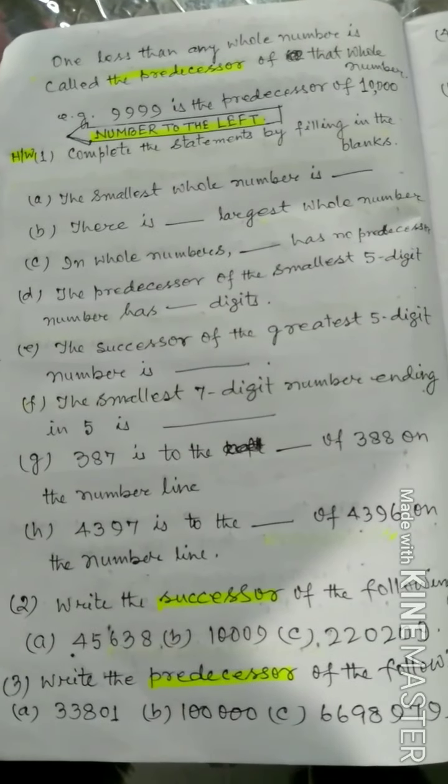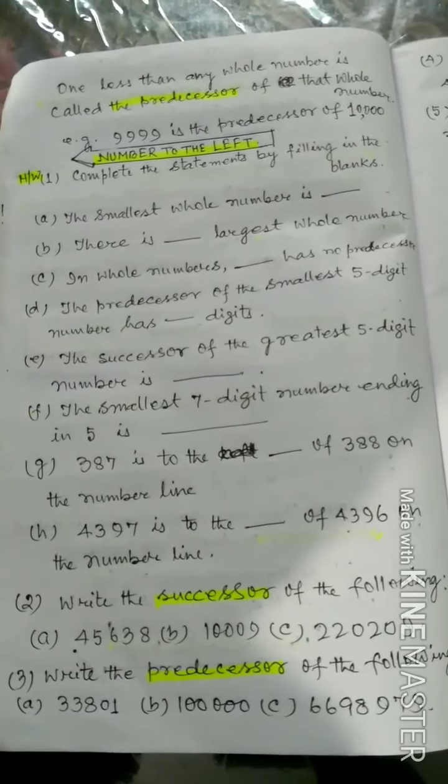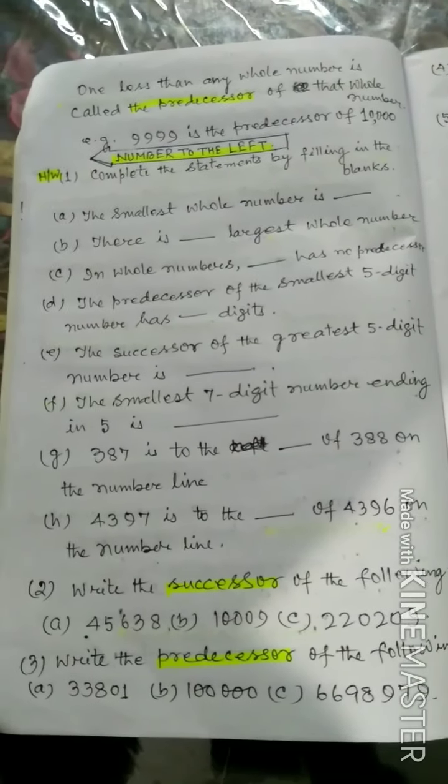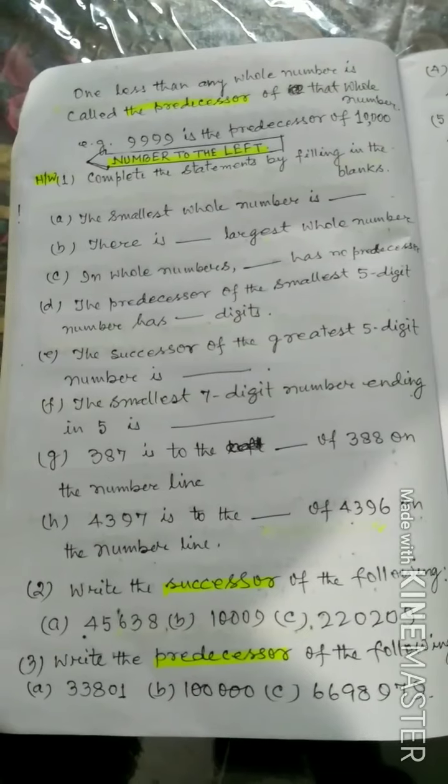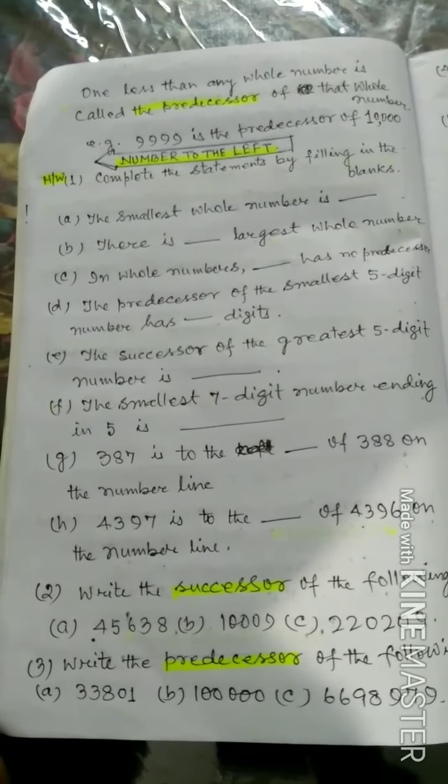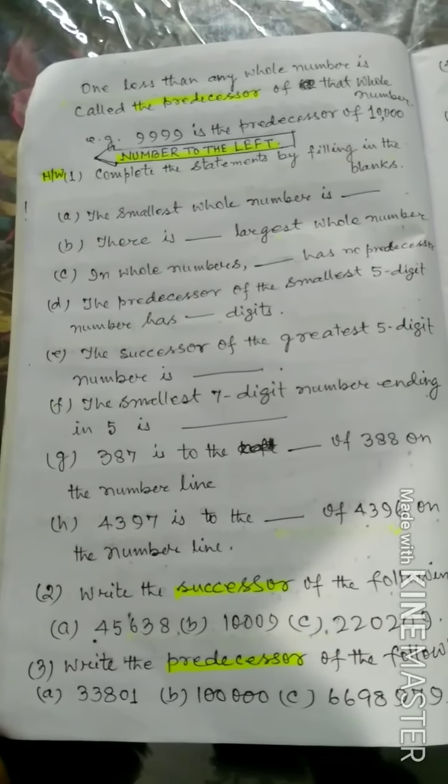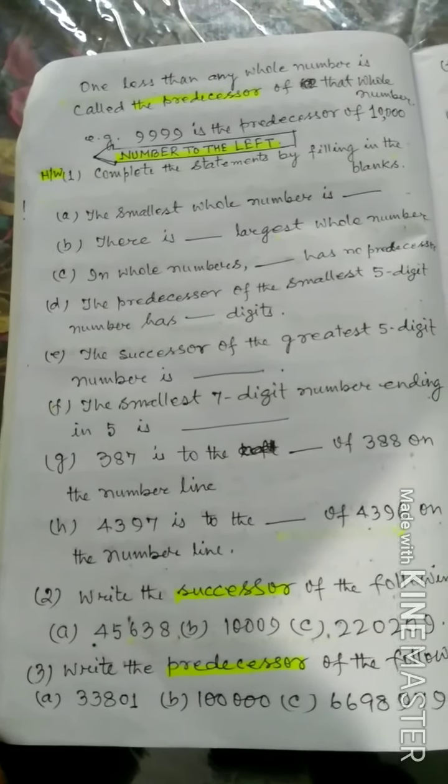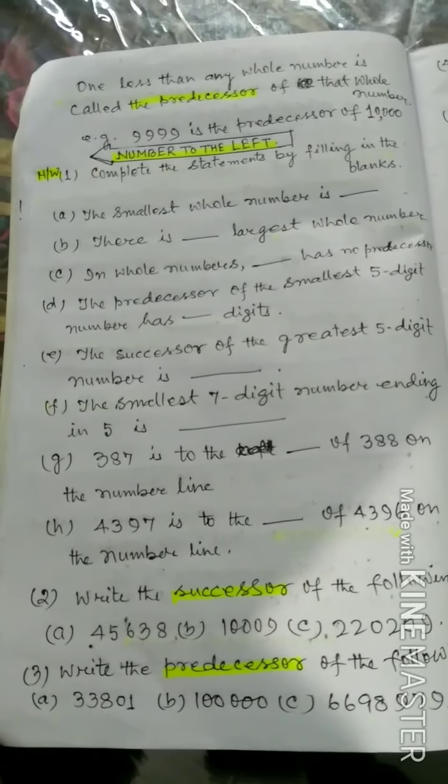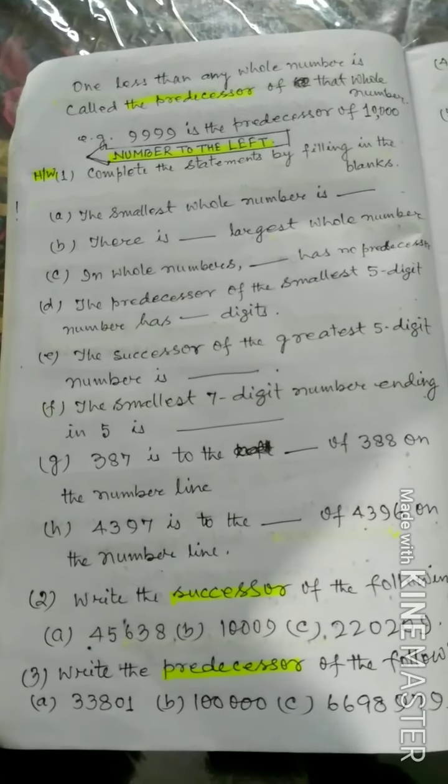Now homework. Complete the statements by filling in the blanks. The smallest whole number is. There is no largest whole number. In whole numbers, 0 has no predecessor. The predecessor of the smallest 5-digit number has 4 digits. The successor of the greatest 5-digit number is 100,000.